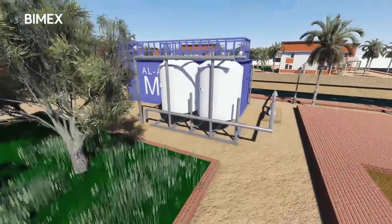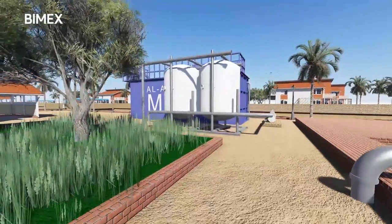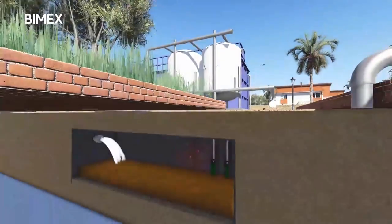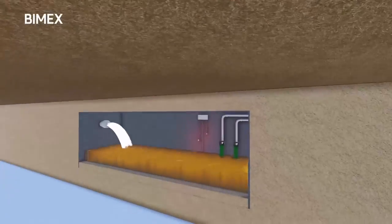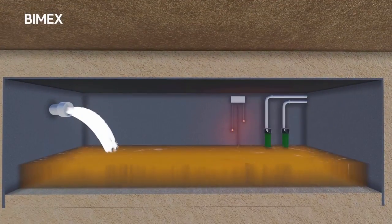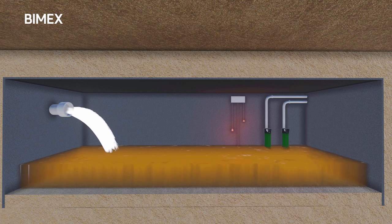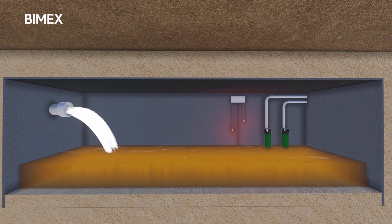Wastewater from communities flows to an underground equalization tank. These tanks come with two pumps, both controlled with lever switches mounted inside the tanks. The sump comes with a control panel that controls the pumps based on signals received from the lever switches.